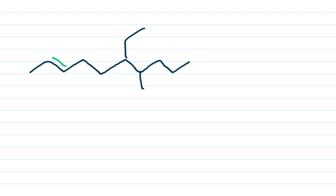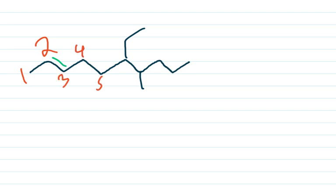When we name any compound, we start numbering the longest carbon chain. Once we see a double bond it's going to be an alkene, so we're looking for the longest carbon chain that has the most substituents. We also want the double bond on the least carbon number. Starting from this end, the double bond falls on carbon number two, which is the least possible, so that's the correct direction.